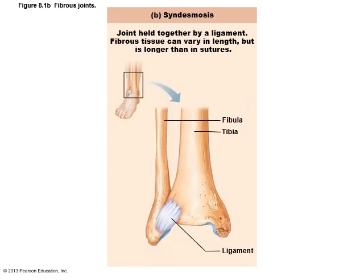Then you have syndesmosis. The syndesmosis is made up of a ligament that holds together the distal ends of the ulna and the radius, and the tibia and the fibula. You can see the relationship here between the ligament that joins the fibula to the tibia.